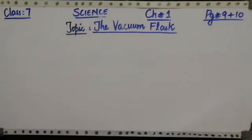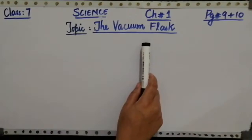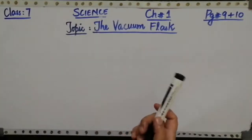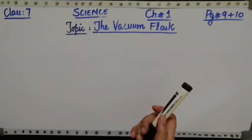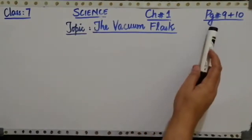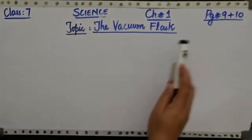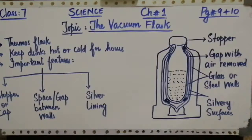Bismillahirrahmanirrahim, Assalamu Alaikum dear students. Welcome to Grade 7 Science class. Today we are going to start the next topic of Chapter 1, which is the vacuum flask, also known as the thermos flask. Vacuum flask is basically the application of different ways of transferring heat: conduction, convection, and radiation. Open your book on page number 9 and we will proceed up to page 10. This is the last topic of Chapter 1.